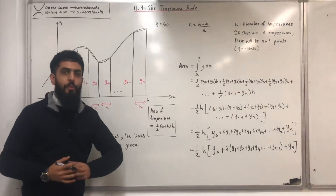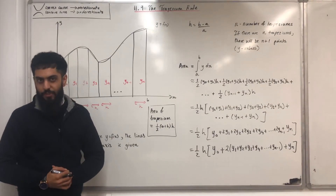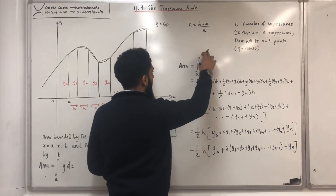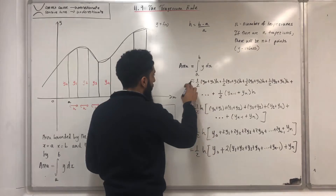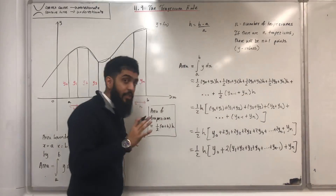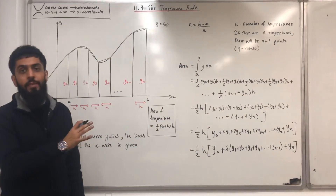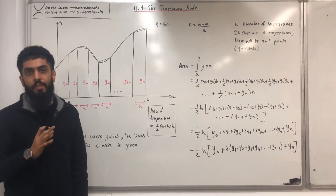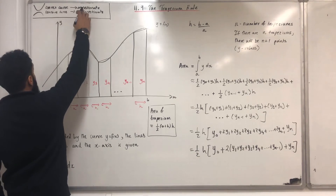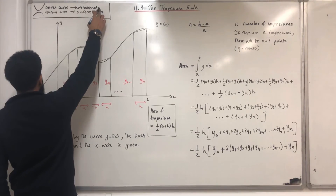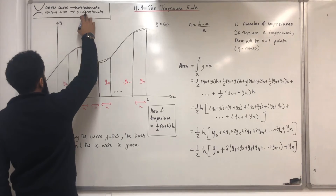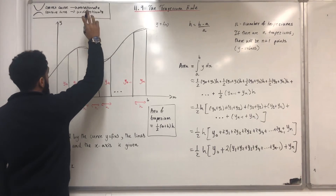So what have I produced? It is the Trapezoid Rule, which says that the area given by this integral is approximately this result. Your approximation can be an overestimate or underestimate. In general, if you have a convex curve, your approximation is an overestimate; if you have a concave curve, your approximation is an underestimate.